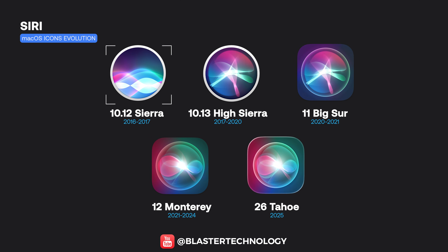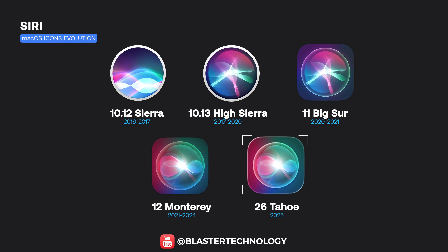The Siri icon first appeared in macOS Sierra as a circular, abstract symbol based on sound waves. It became more dynamic in High Sierra, switched to a square shape in Big Sur, and today appears more refined and polished.